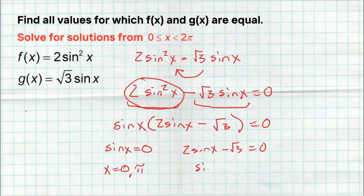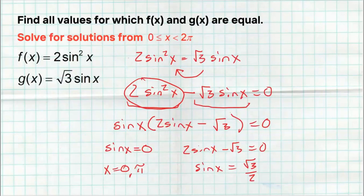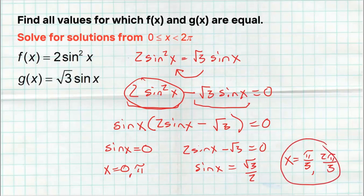The other equation is pretty easy to solve: add the radical three, then divide by two, giving sine of x equals radical three over two. Where does that happen? At pi over three and two pi over three. So pi over three and two pi over three are the answers to that one.